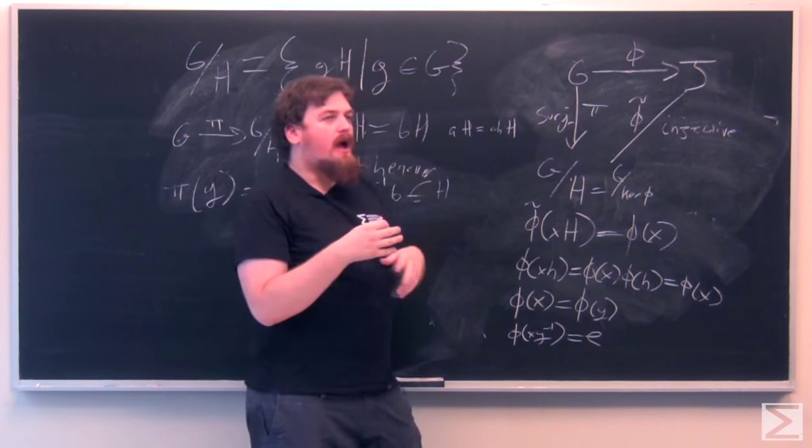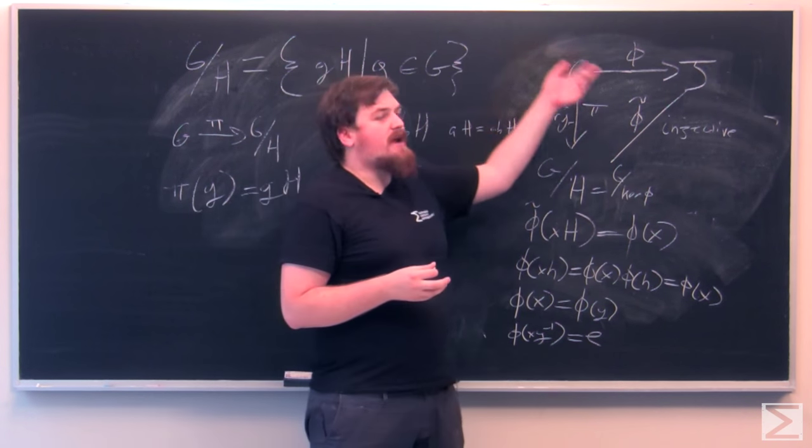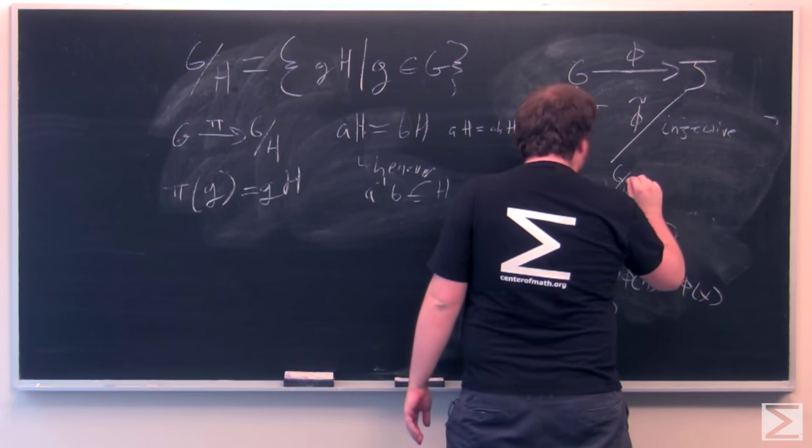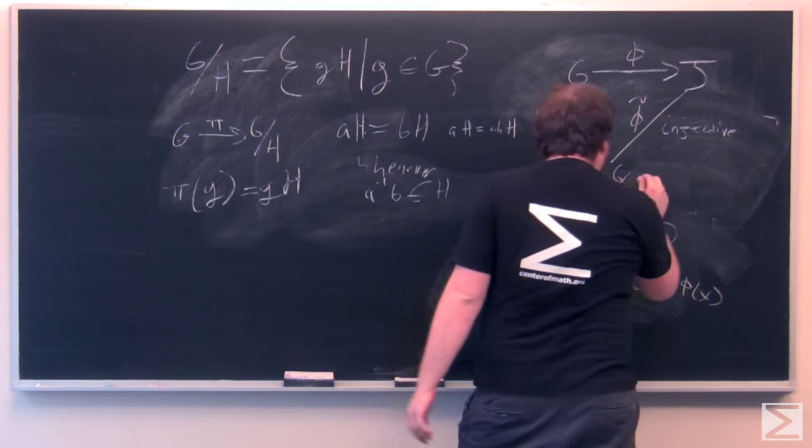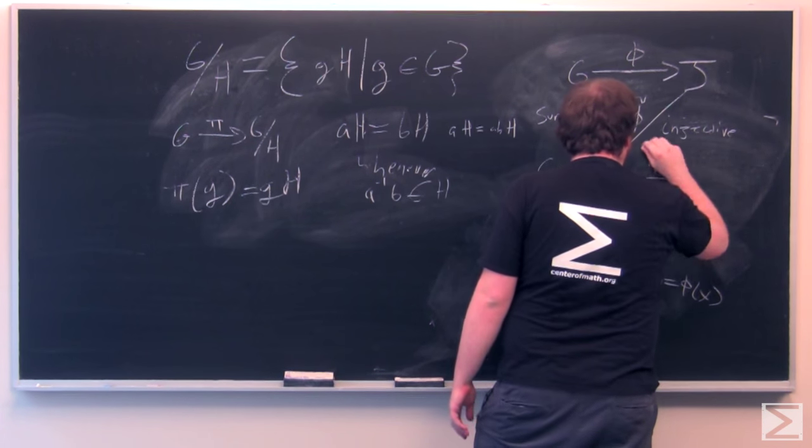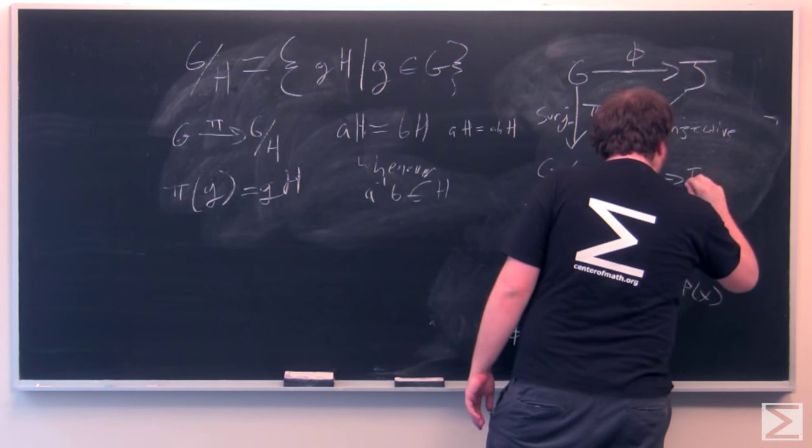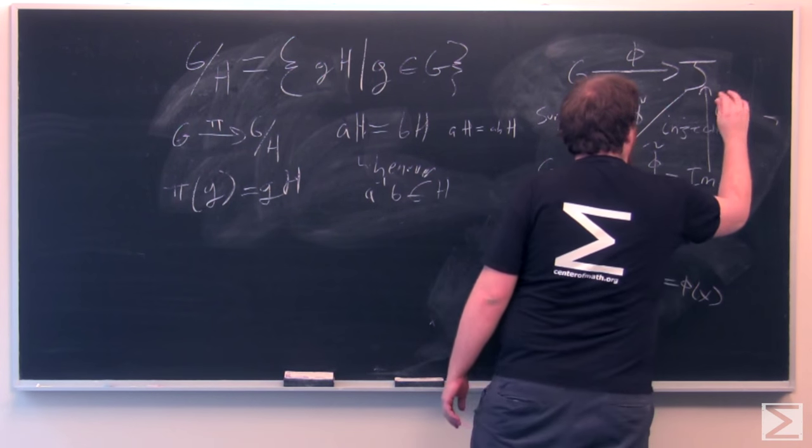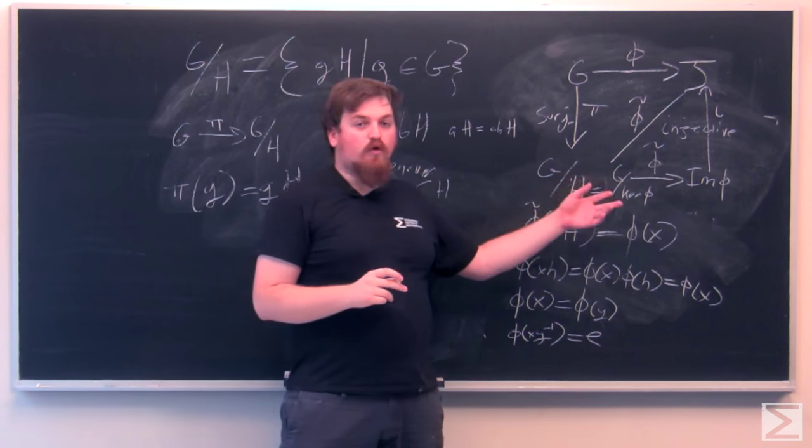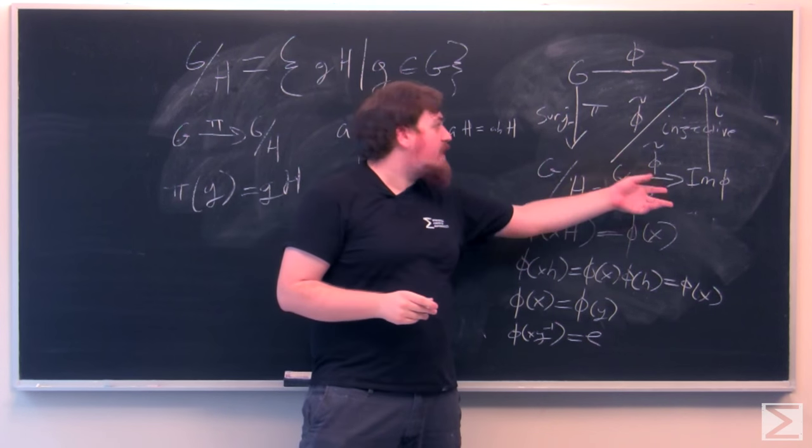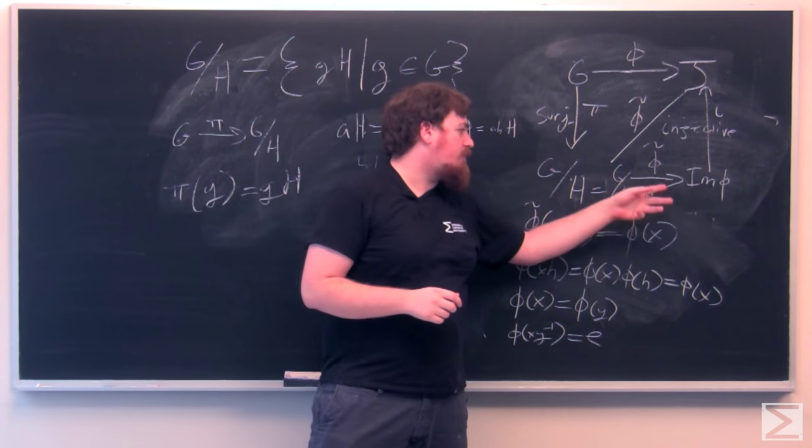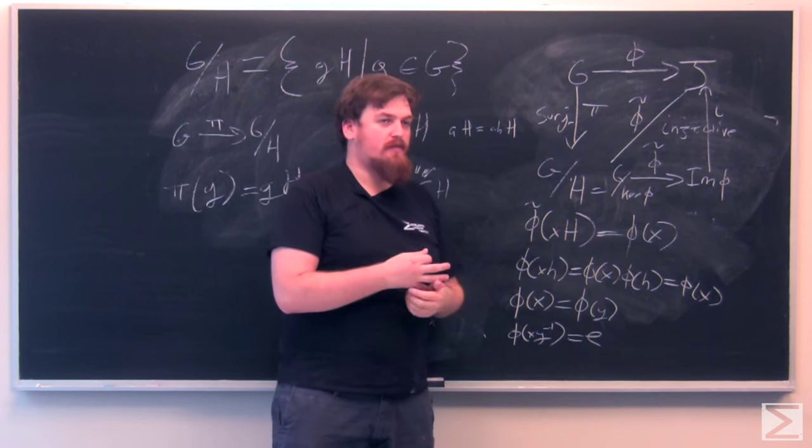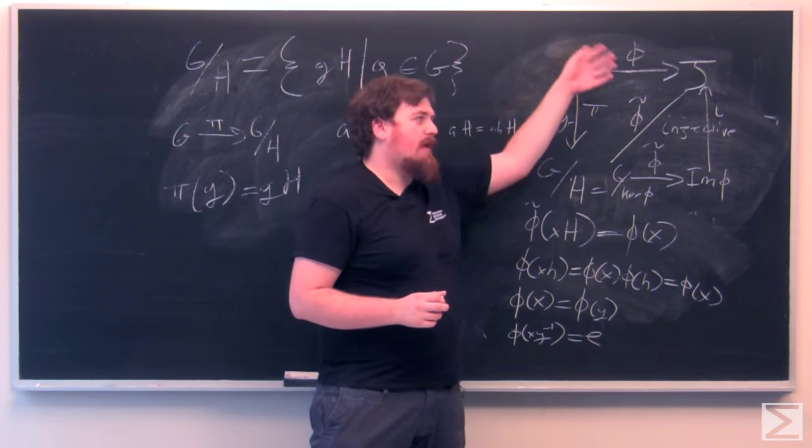And we can also factor this further into an isomorphism and another more natural injection. So this says that G mod H is isomorphic under phi tilde to the image of phi of G inside J.